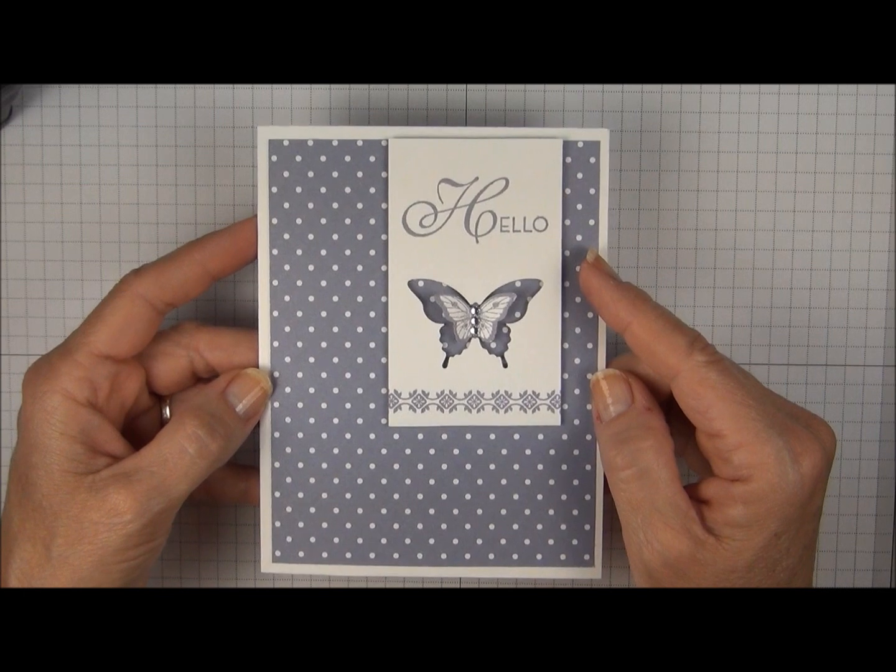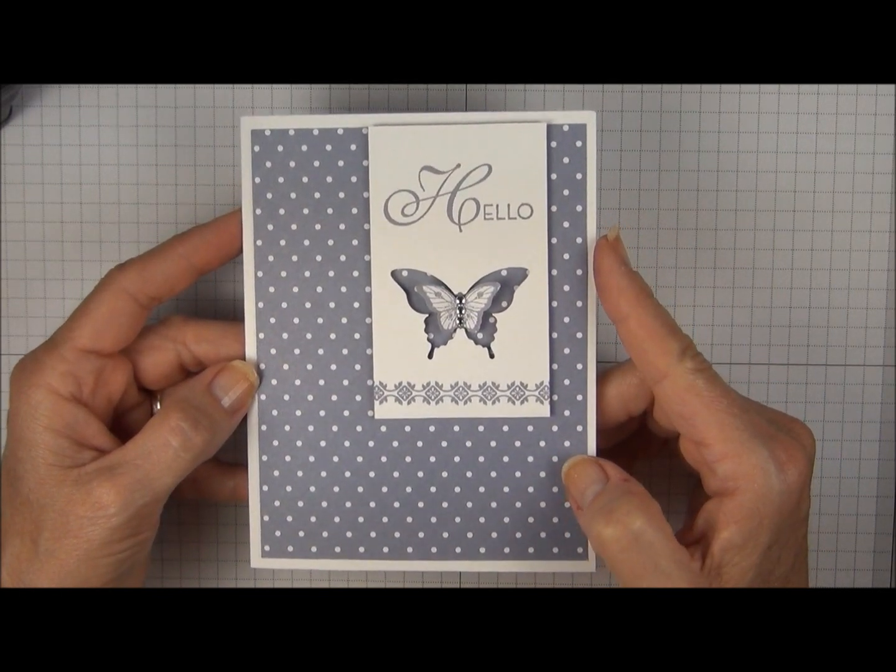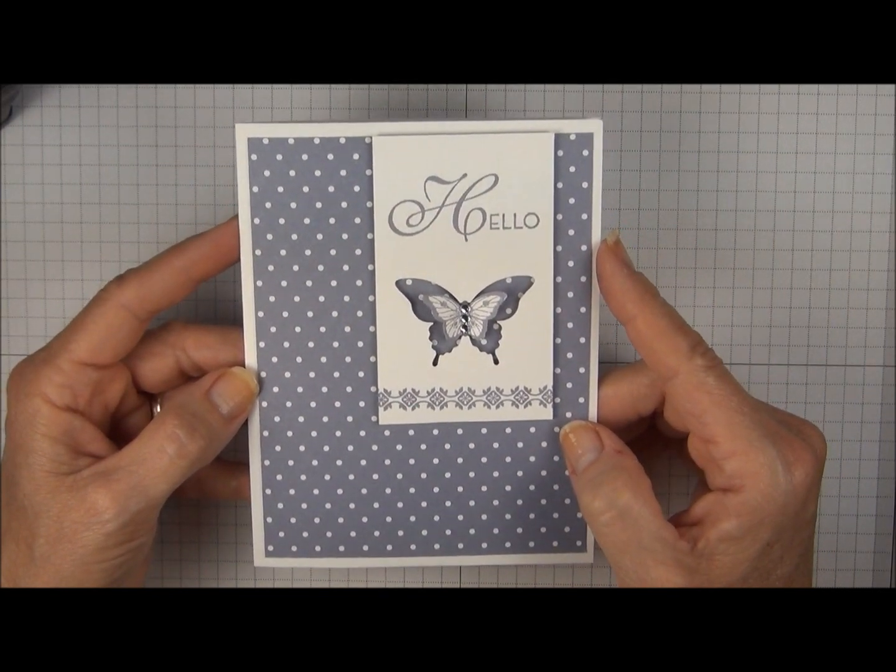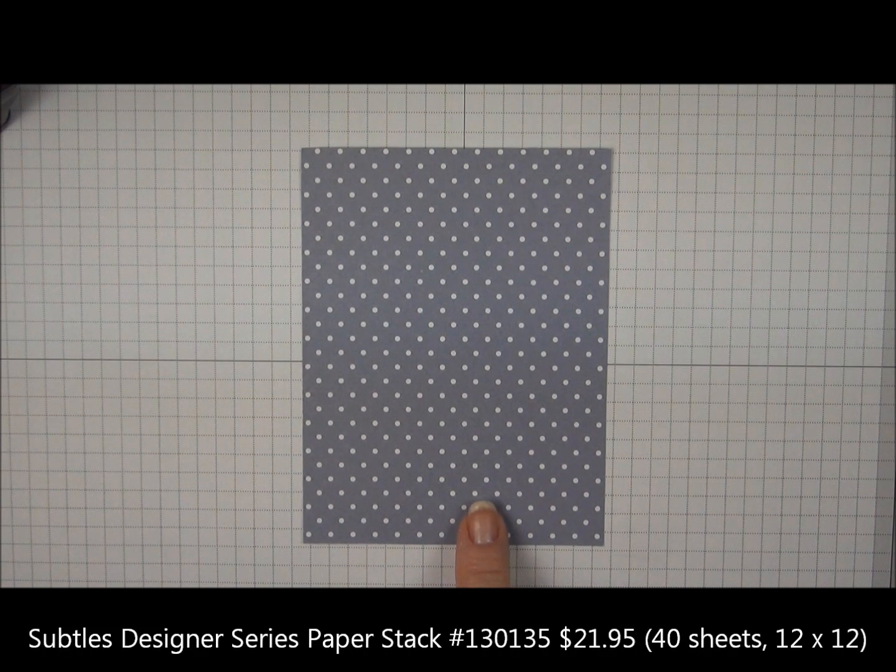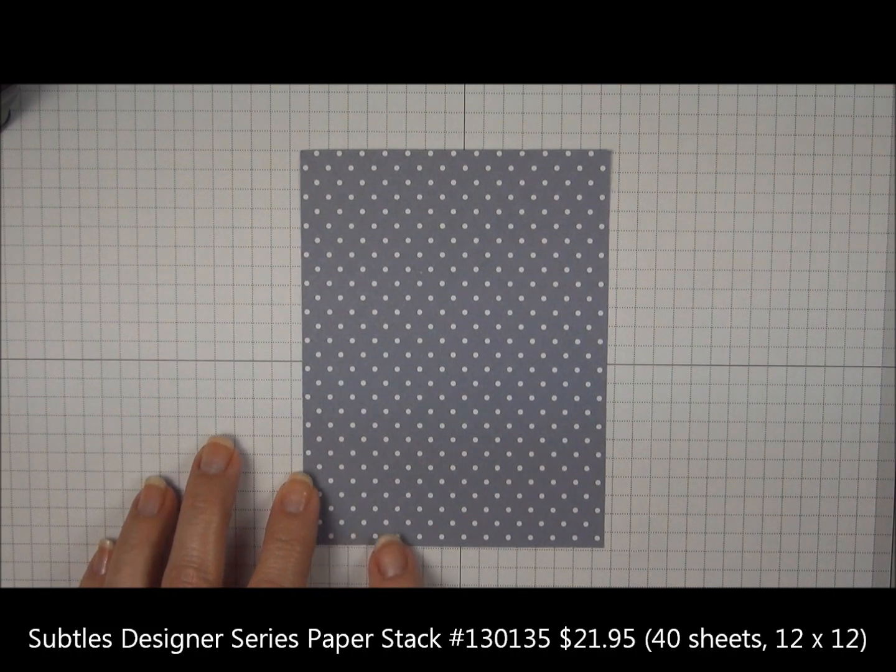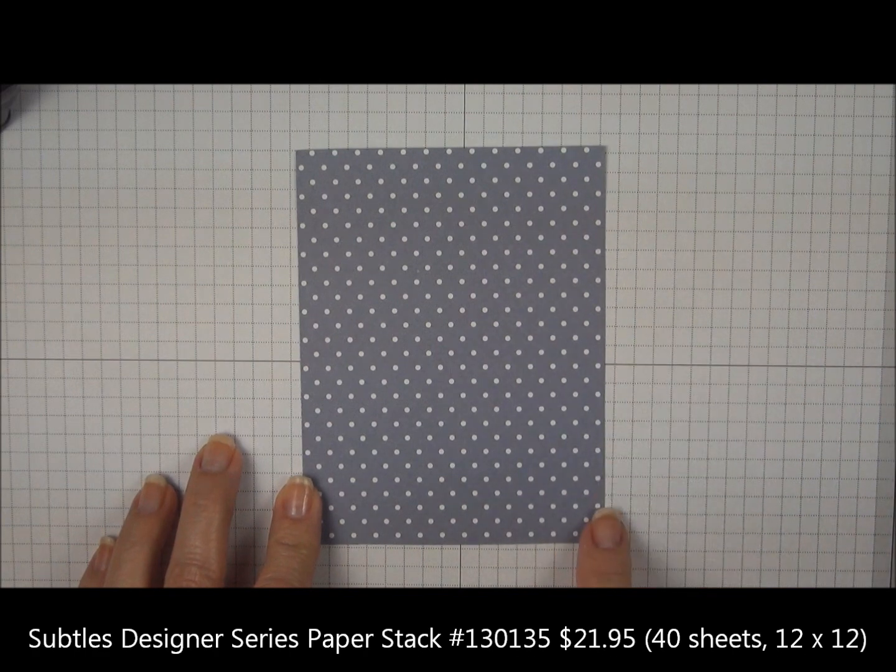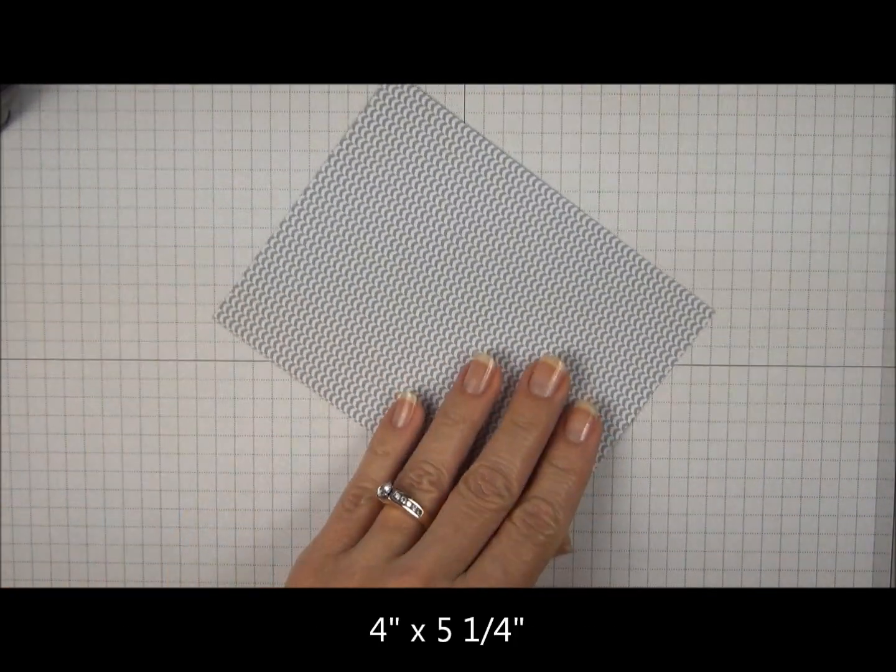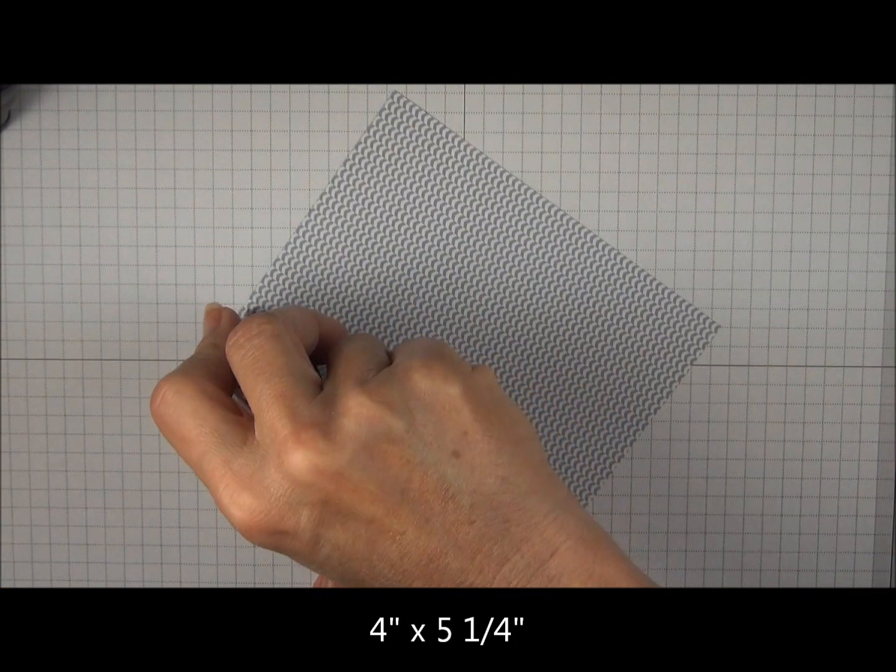This is a great card to make using our Designer Series Paper Stacks and Whisper White Card Stock. You're going to start with the Designer Series Paper Stack and we're going to cut it to four inches by five and a quarter and layer this onto Whisper White Card Stock.